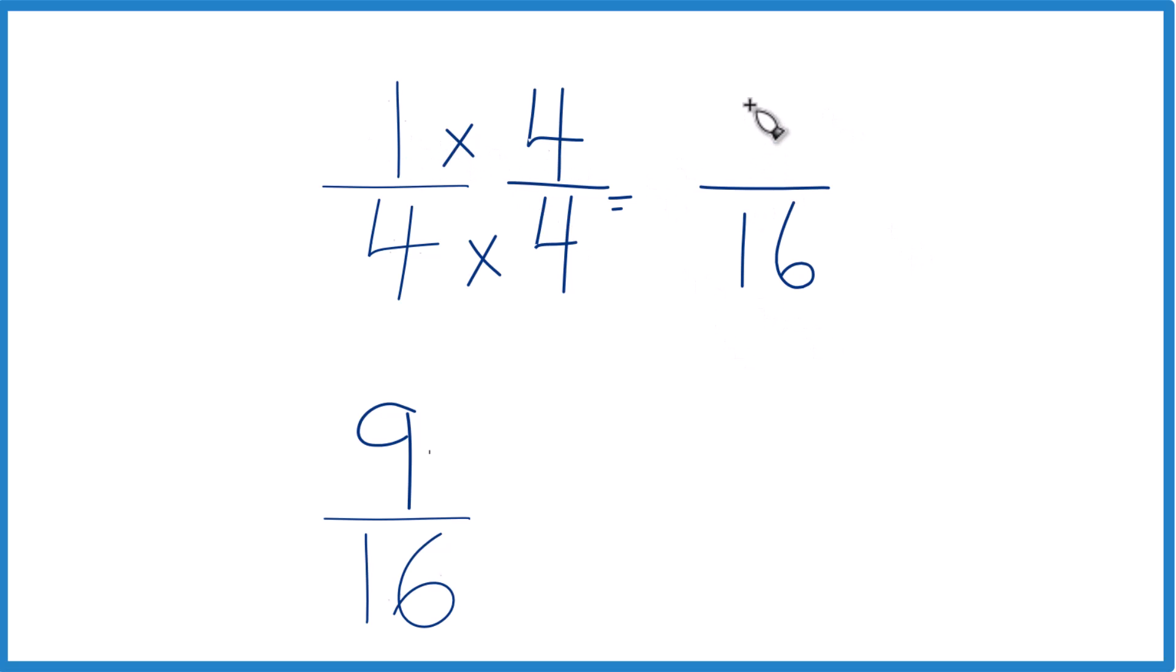1 times 4, that is 4. So now we have 16 and 16. Just compare the numerators. Since 9 is greater than 4, 9/16 is greater than 4/16. And these are equivalent, same value. So 9/16 is greater than 1/4. That's it. It's Dr. B. Thanks for watching.